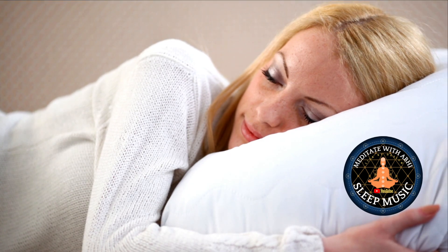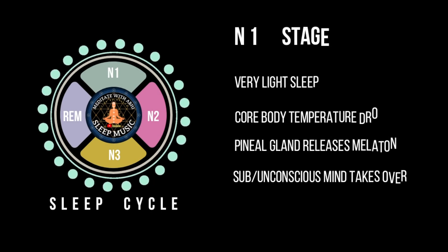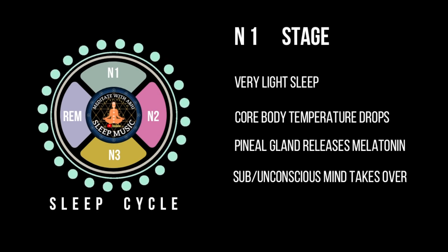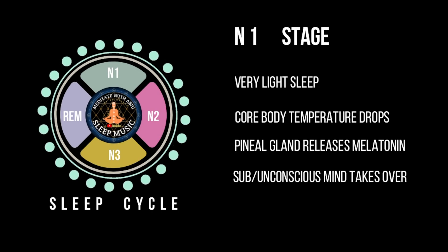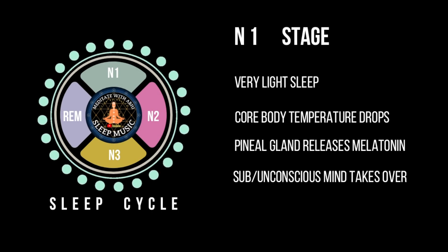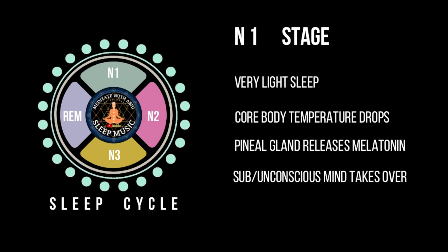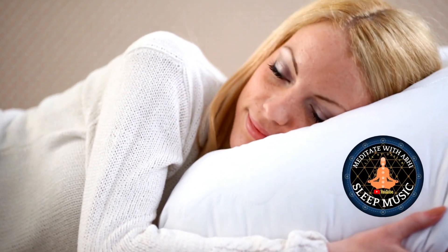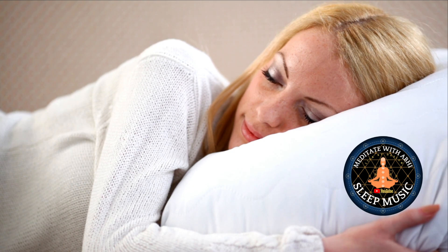So what's going on in N1? First, the core body temperature decreases. Second, your pineal gland starts releasing melatonin — that's the circadian rhythm we talked about in a different video. And the sense of control is shifting from your conscious mind to your unconscious mind. That's why it's very important to feel safe so you can hand over the control to your subconscious mind. Because of this transition, one might feel little jerks or contractions, and these movements are sometimes accompanied by a sense of falling or tripping. These are considered normal in N1 sleep.